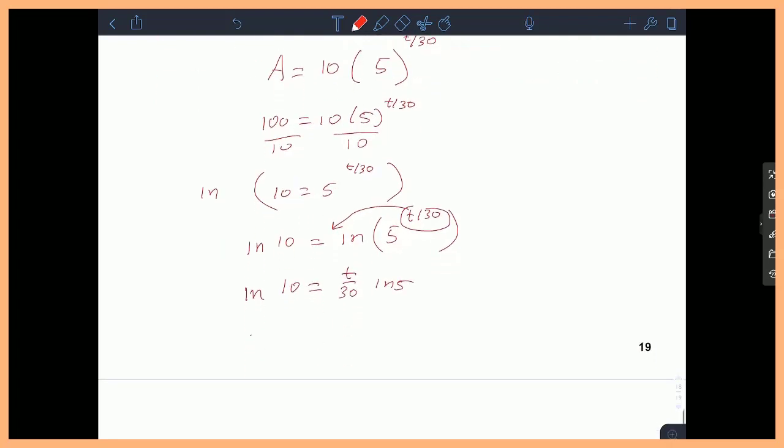And what that means is that T is simply equal to 30 times ln 10 over ln 5. And if you use a calc, it'll approximately give you 42.920, which is essentially 43 days.